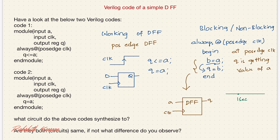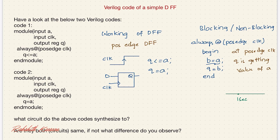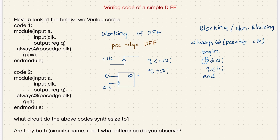Now let's analyze the same example using a non-blocking statement. Non-blocking statements execute in parallel — the second statement won't wait till the execution of the first statement; it executes in parallel with the first statement.